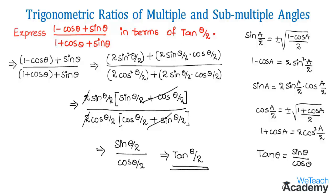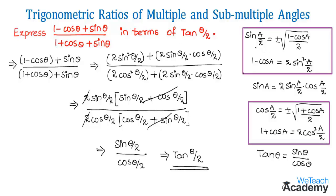Make a note of all these formulas for multiple and sub-multiple angles: sin(a/2) = ±√((1 minus cos a)/2), from which we can derive 1 minus cos a. Similarly, the formula for cos(a/2) gives us 1 plus cos a. Learn these formulas, as they are very important for solving examples in further videos.